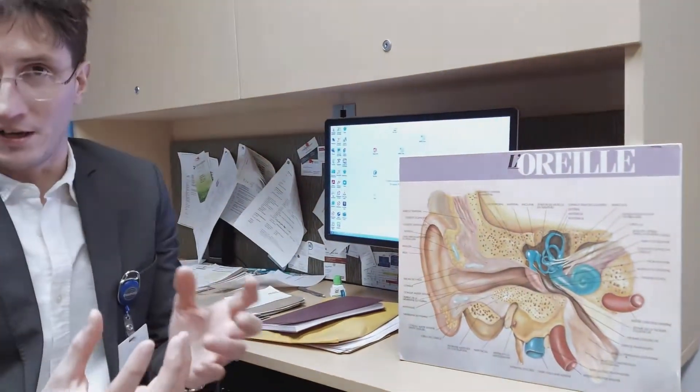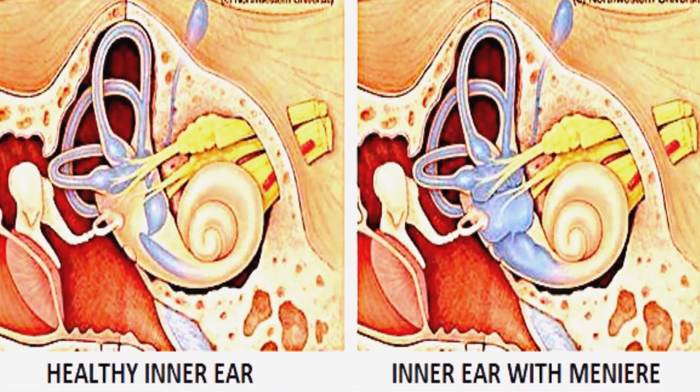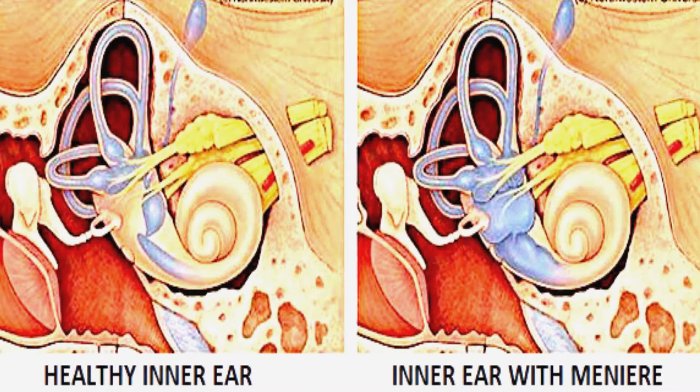What we know of Meniere's disease is that the fluid embedded inside that bony labyrinth expands. There's an expansion of fluid. When the fluid expands, it damages the membranes and the cells located inside that structure itself. Those damages — those lesions — cause the symptoms that we know with Meniere's disease.